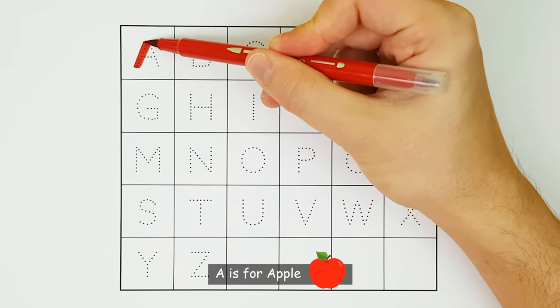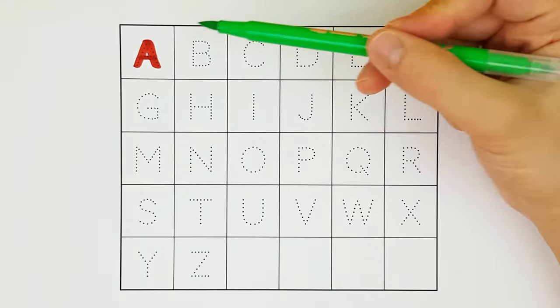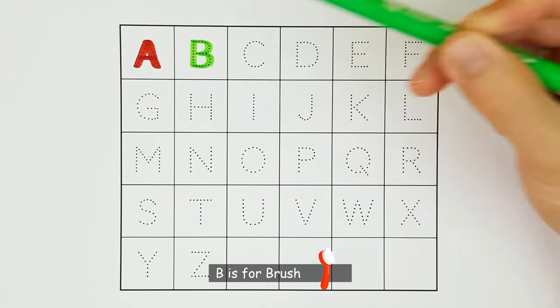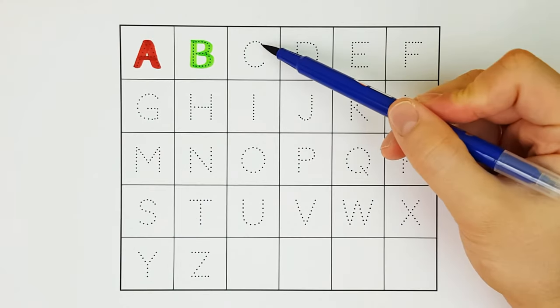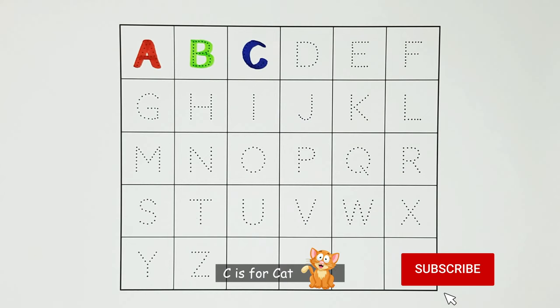A. A is for apple. A. B. B is for brush. B. C. C is for cat. C.